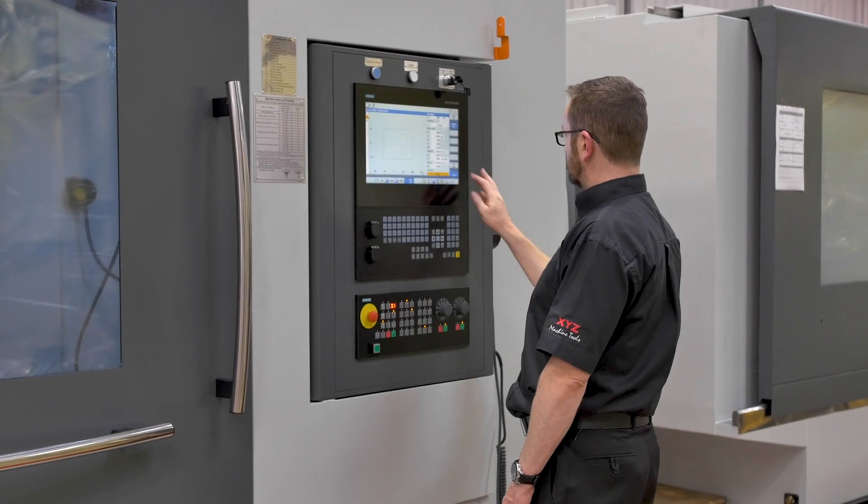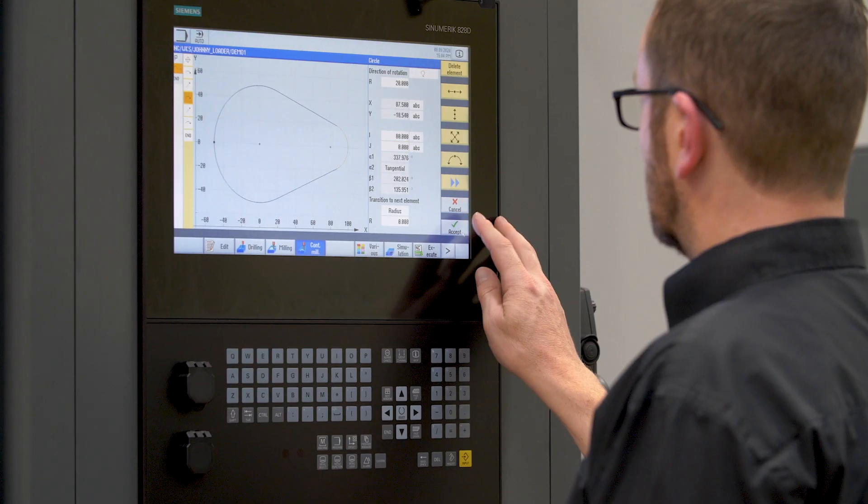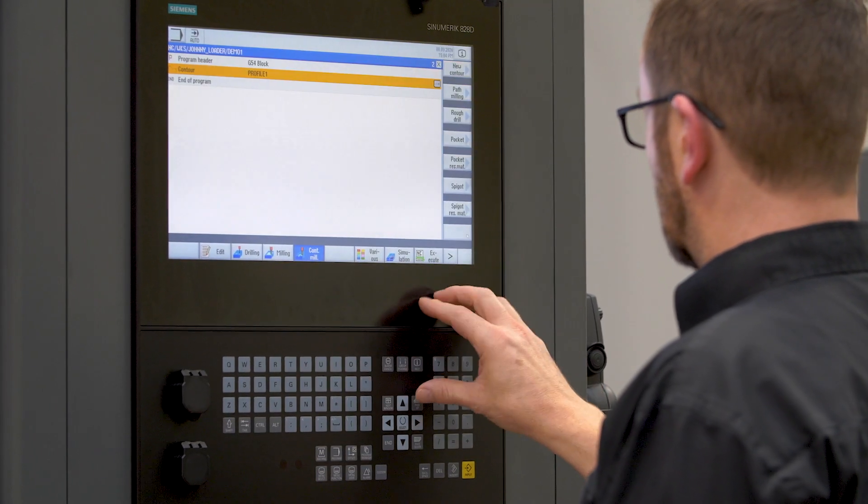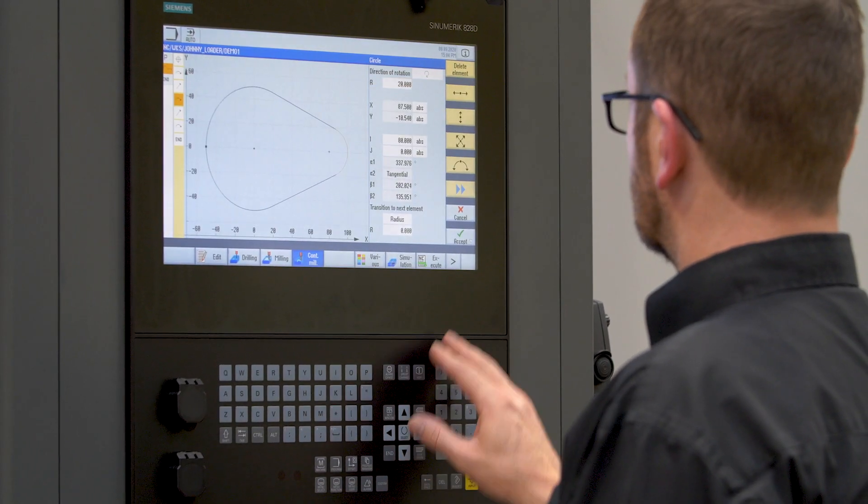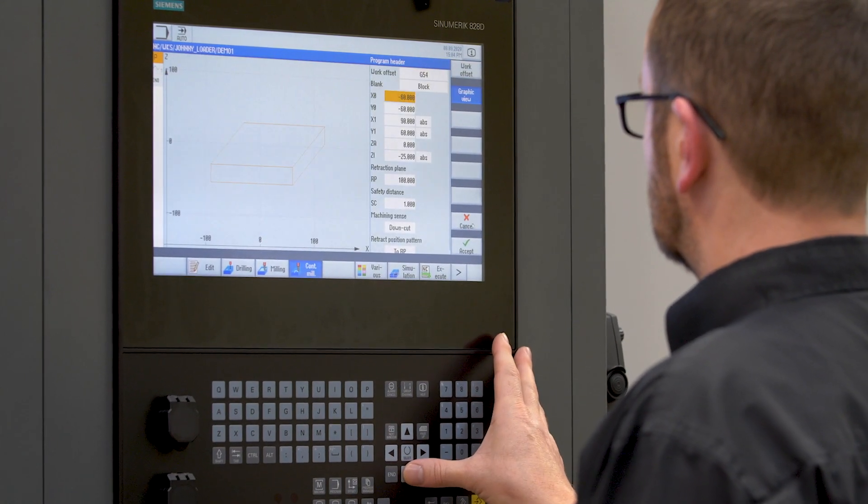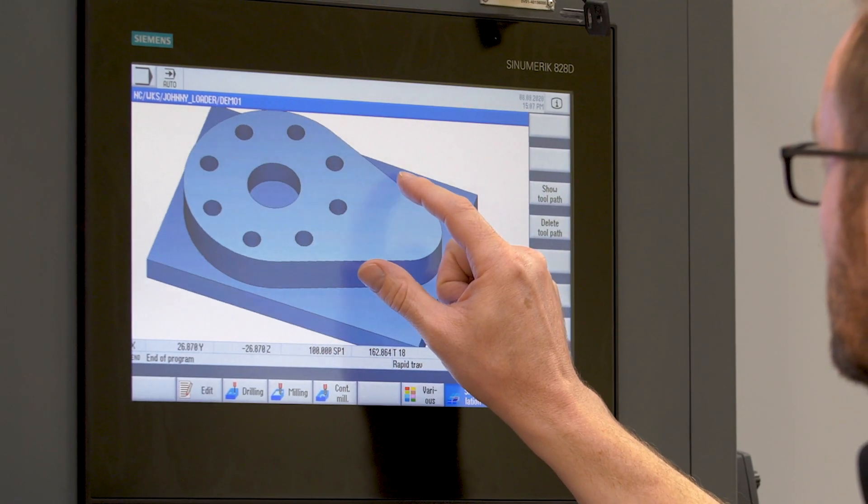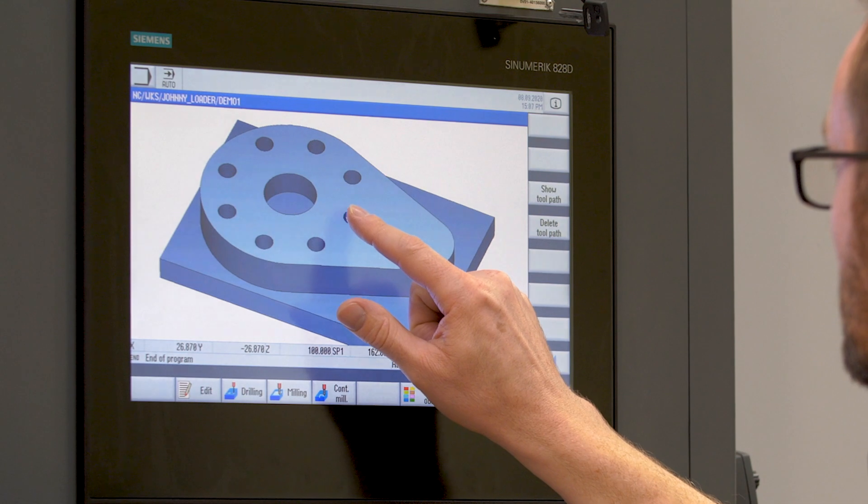Having worked alongside Siemens UK for 25 years we have tailored their controls to suit our VMCs perfectly. Siemens with the 828D shot mill control provides our customers with intuitive and conversational programming with easy to use graphics, rotating and zooming to see intricate detail.